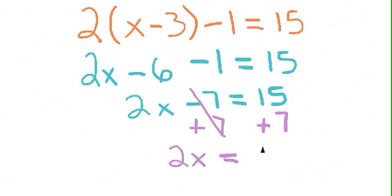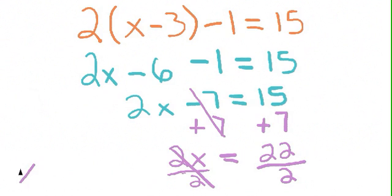15 plus 7 is 22. Now I ask what is the 2 doing to the x? The 2 is multiplying the x. The opposite of multiplying by 2 is divided by 2. And I have to do the same thing to the right-hand side to keep the equation in balance. 2 divided by 2 is 1, so we're left with an x. 22 divided by 2 is 11.